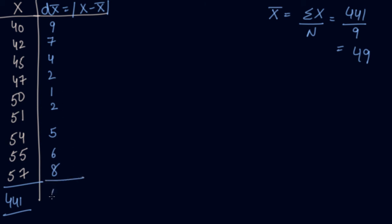When you add this, you get 44 as the answer. So you calculate the mean deviation using mean with the formula summation dx divided by n, that is number of observations. So 44 divided by 9 is 4.89.